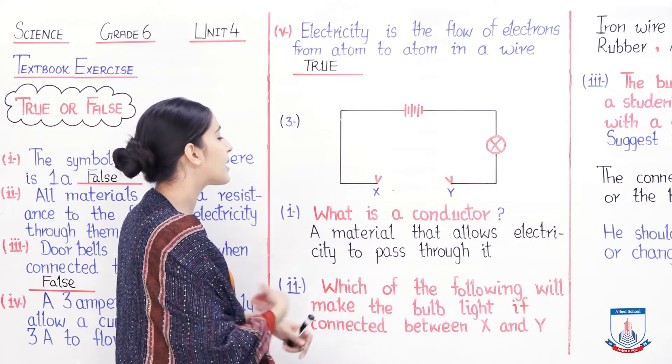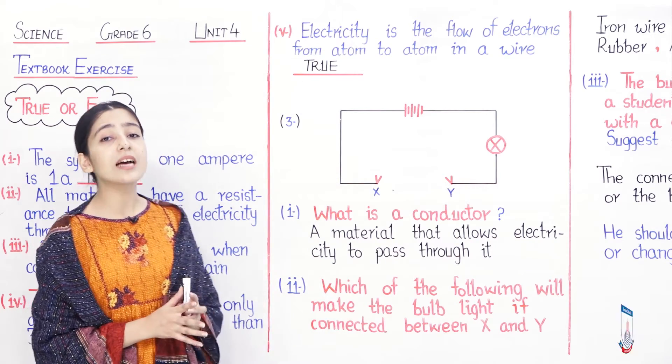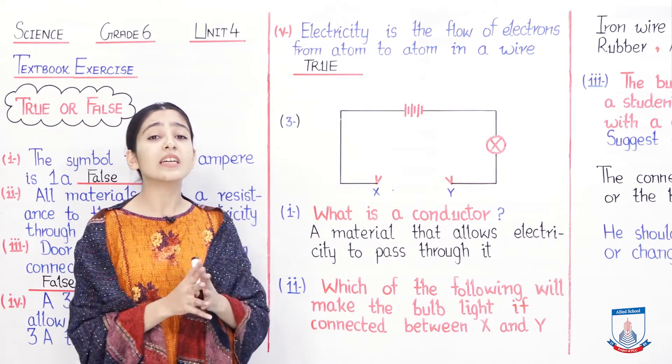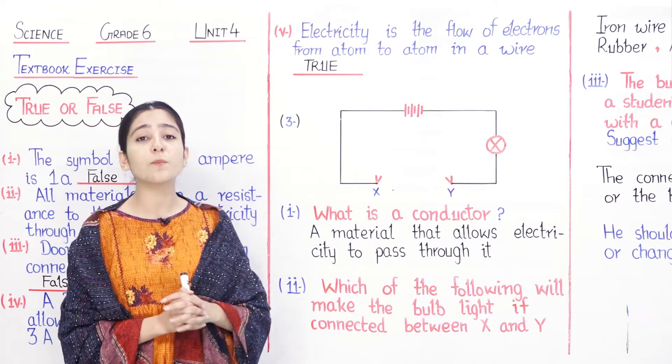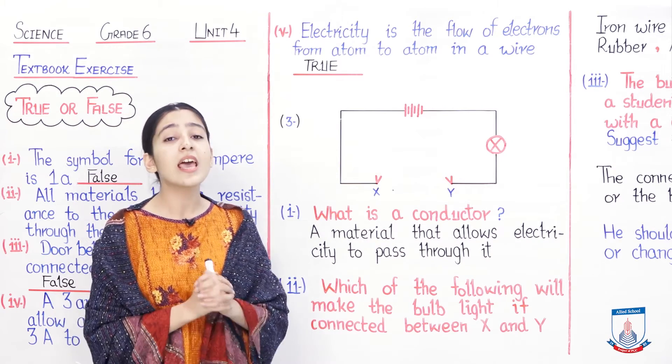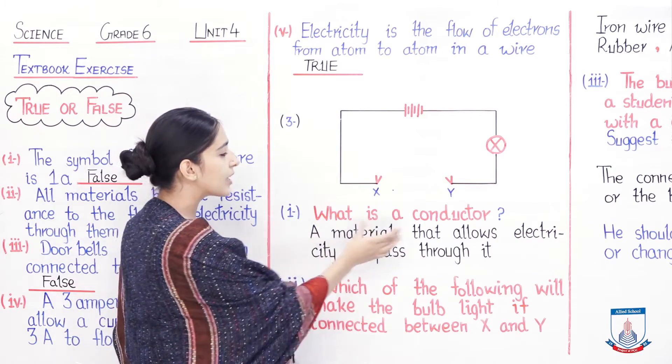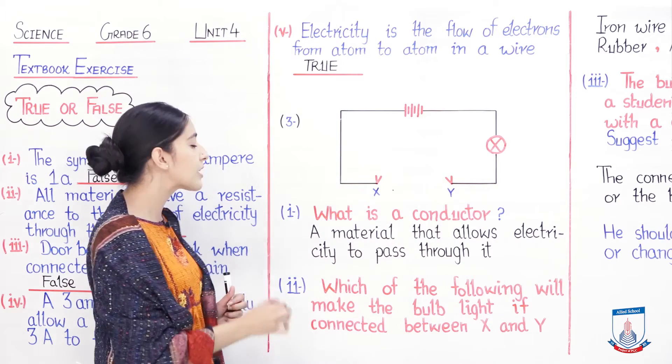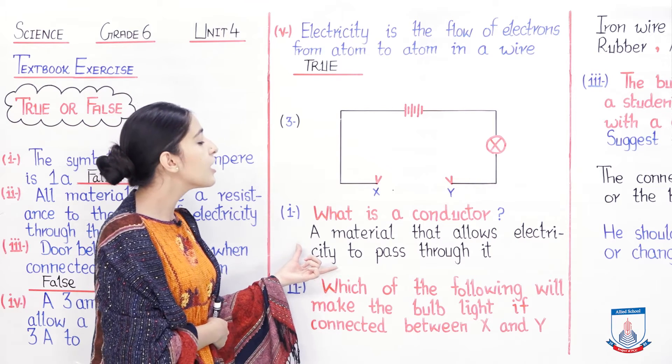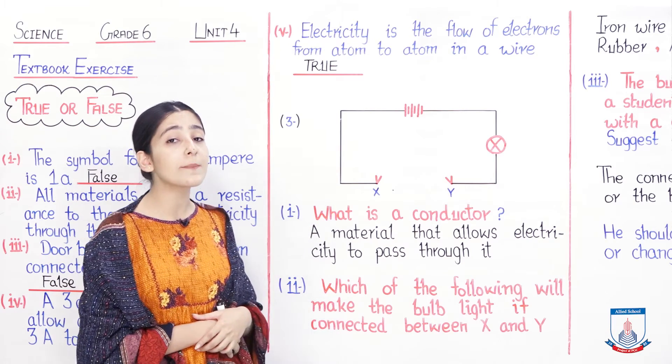Question number one is, what is a conductor? Conductor ek aisa material hota hai jo apne andar se current ko pass through ho lene deta hai, and the second is an insulator, aisa material jo apne andar se current ko pass through nahi hone deta. Yahaan baat ho rahi hai conductor ki. Aap iske answer mein likhenge: a material that allows electricity to pass through it. This is the answer to the first part of question number three.